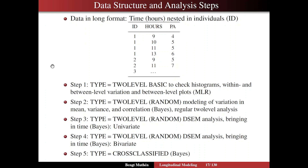I'm going to propose that we do five steps in our analysis to understand the data better. Step 1, which we're talking about here, is going to be a two-level basic analysis to check histograms for the variables, within and between level variation, and between level plots. We're going to use maximum likelihood with robust standard errors and chi-square for that.